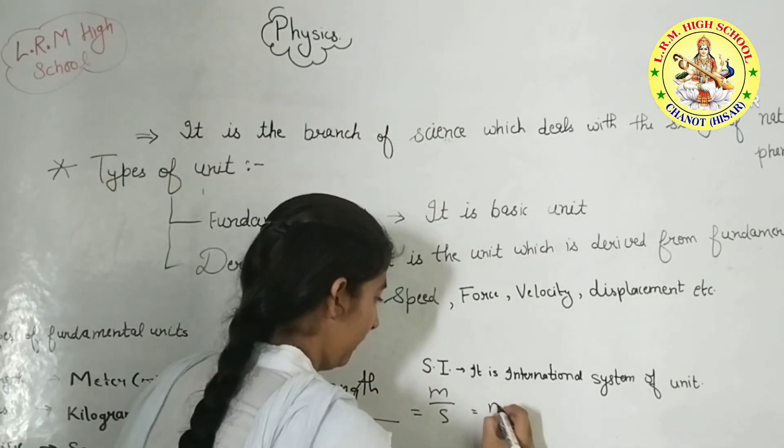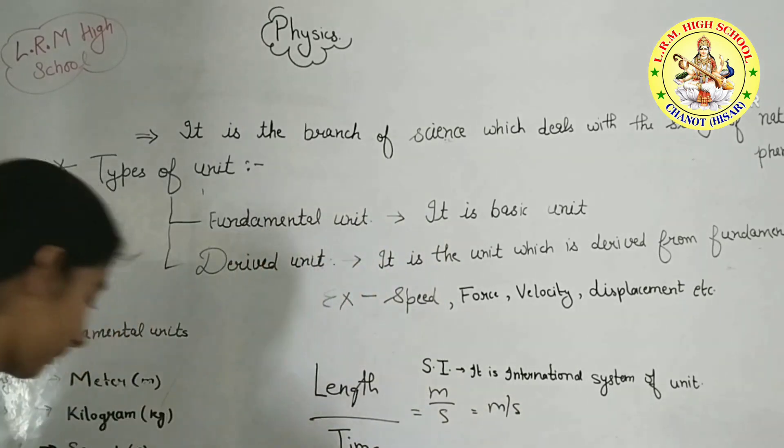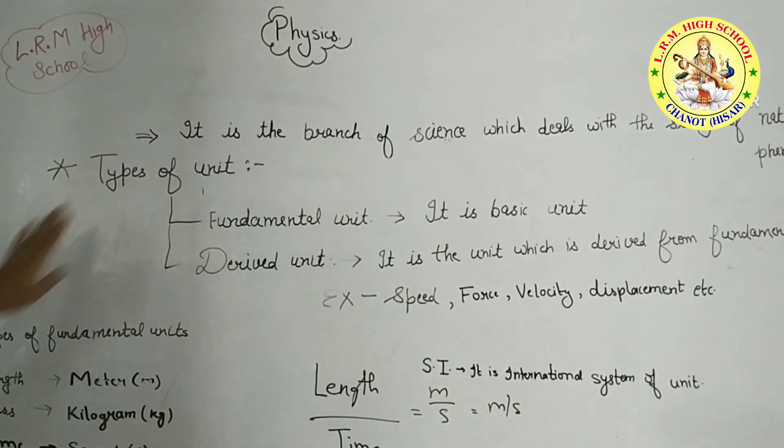Derived unit is meter per second. Now, we learn types of units.